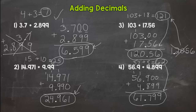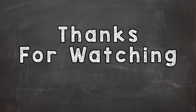So that's adding decimals. Line up that decimal, use placeholder zeros if necessary, bring that decimal straight down in your answer, and you've got it. Now it's your turn to see if you have it down. Head over to the Mastery Check — I dropped the link below in the description. Thanks for watching.